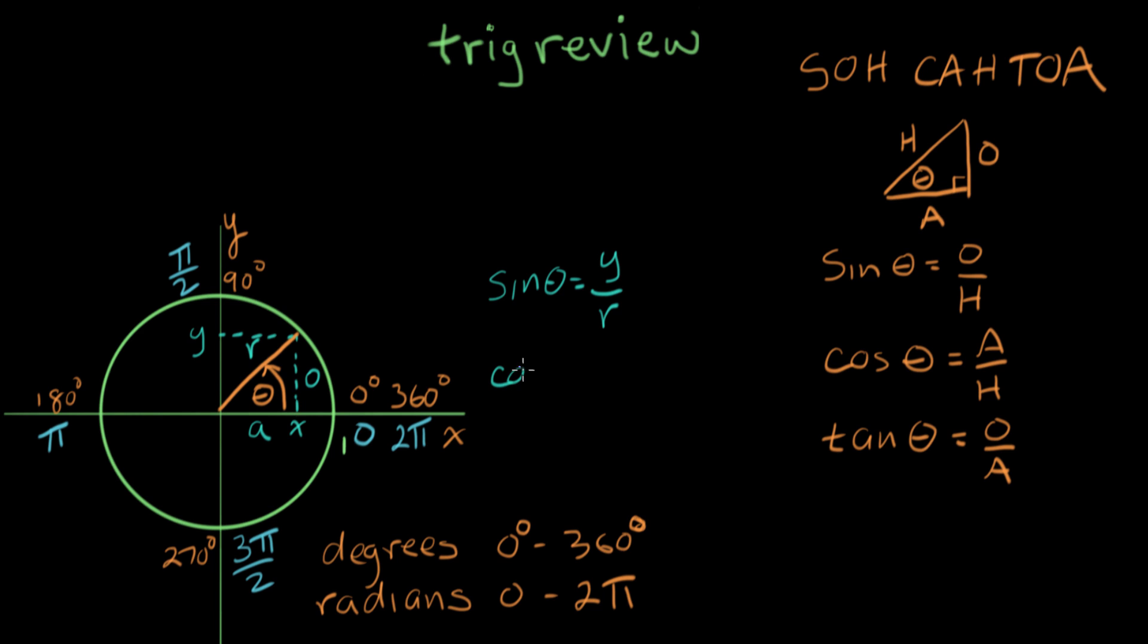If I look at cosine theta, adjacent over hypotenuse. Adjacent is the x-distance over the hypotenuse r. And if we do the tangent of theta, that equals opposite over adjacent, so it's opposite, which is the y-distance, over x, the adjacent.